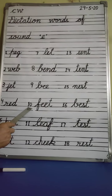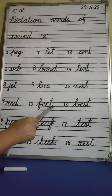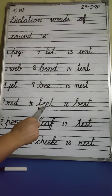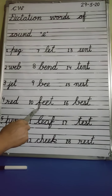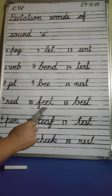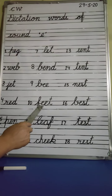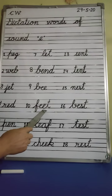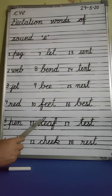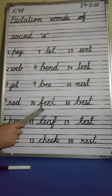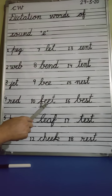Next, number 10. F, double E, T — here also we have double E, so we will give some pressure. F, double E, T — Feet. What is this? Feet. Feet means both our feet — for one we say 'foot' and for both we say 'feet'. Okay.